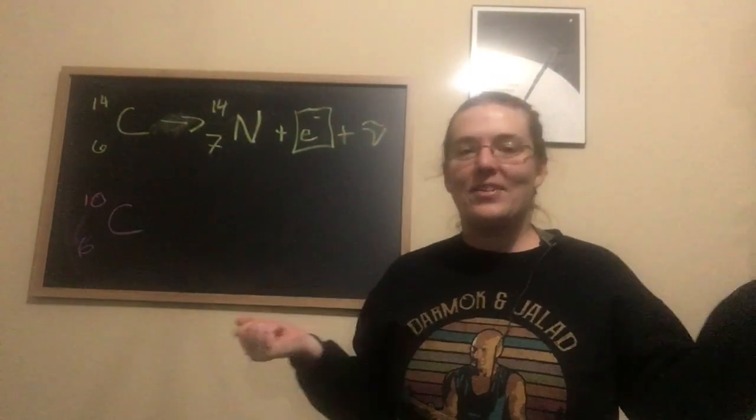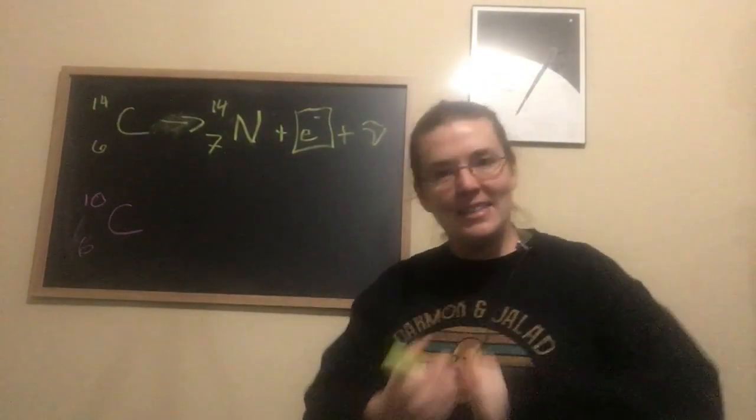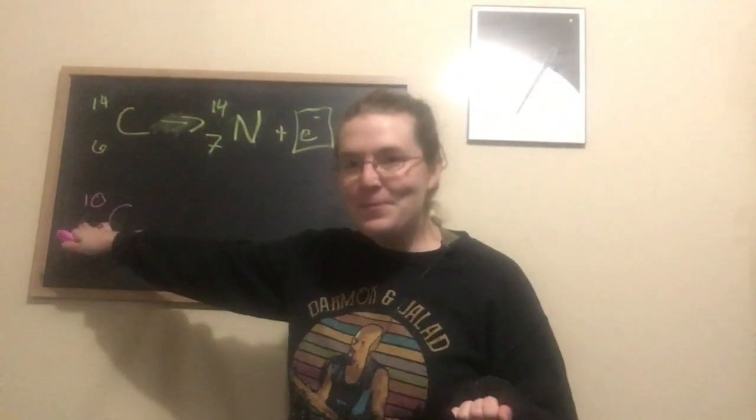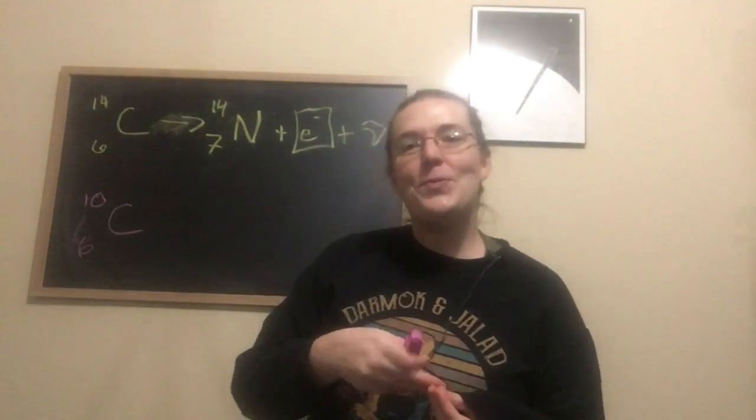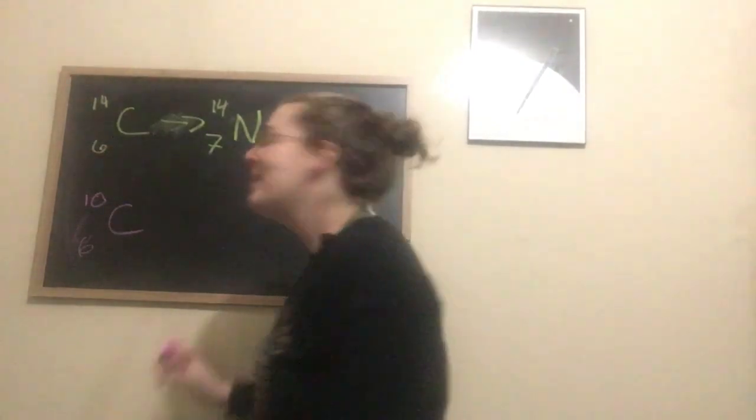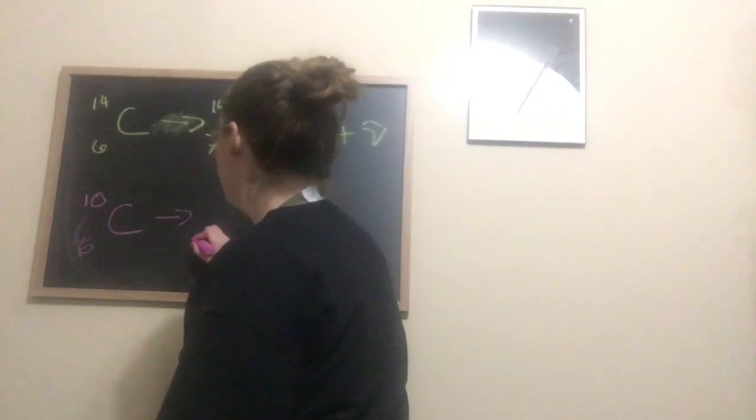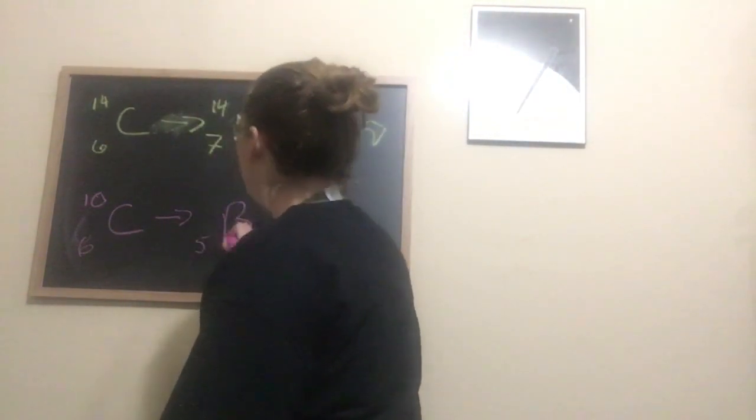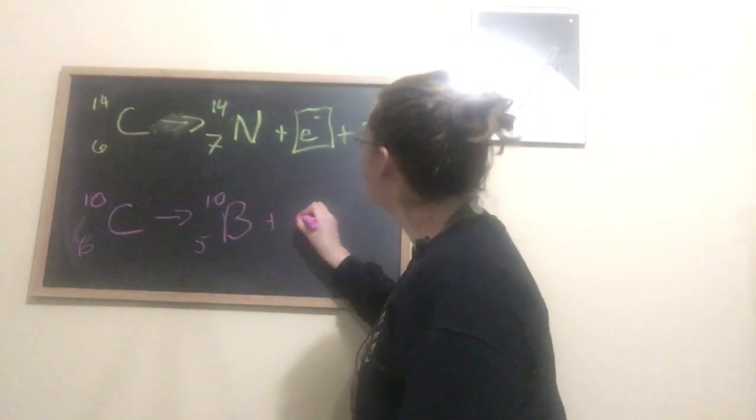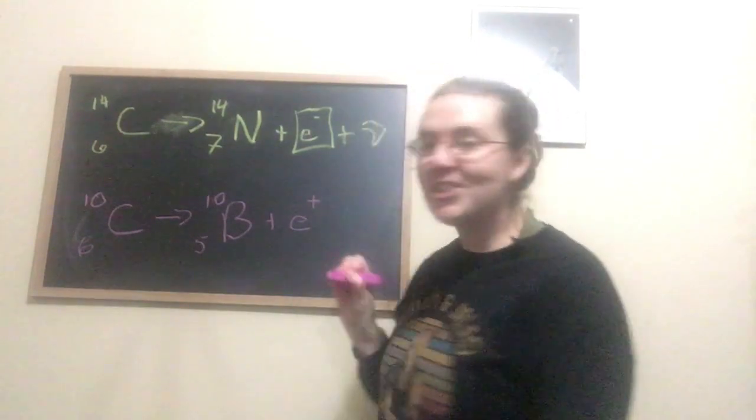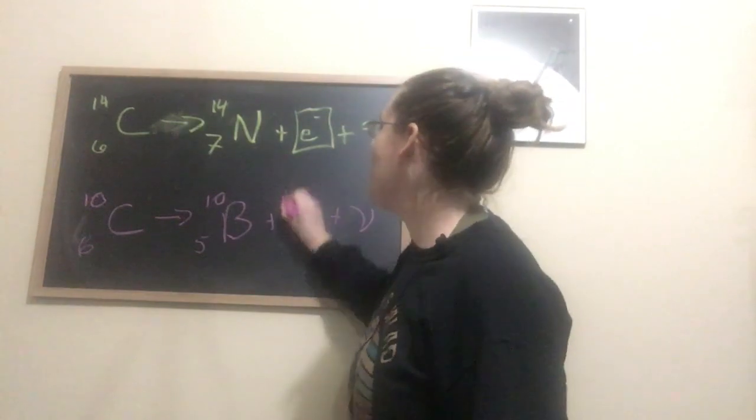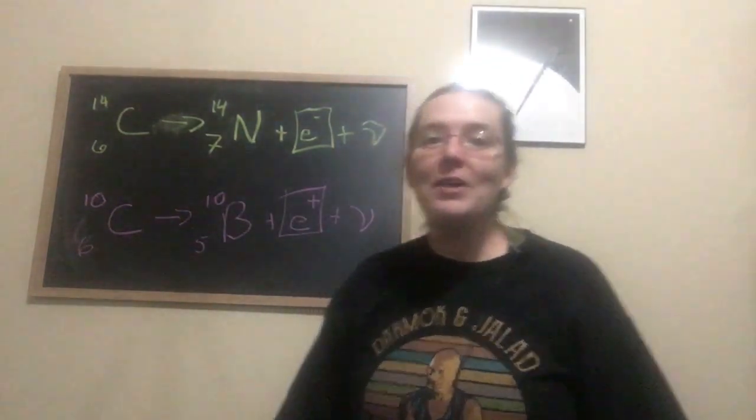For beta plus decay, we're going to use the example of carbon 10. And carbon 10 will beta plus decay into boron, so it will become 5 boron 10 plus a positron, so our beta plus particle, and it will also make a regular neutrino.